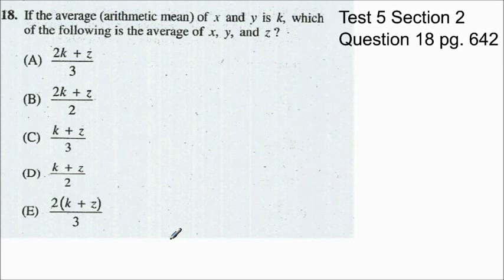Okay let's take a look at question 18 here. This is from test 5. It's section 2. It's on page 642. And the question states if the average or arithmetic mean of x and y is k, which of the following is the average of x, y, and z? Good question here.